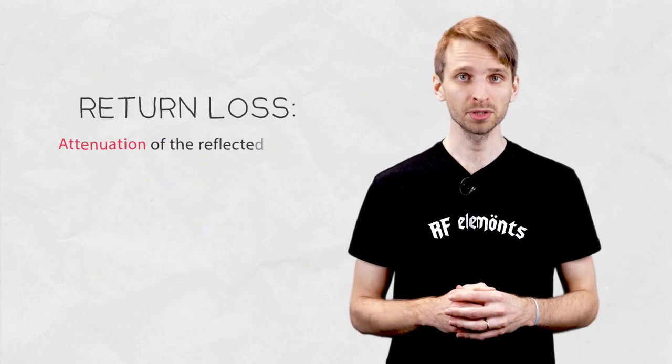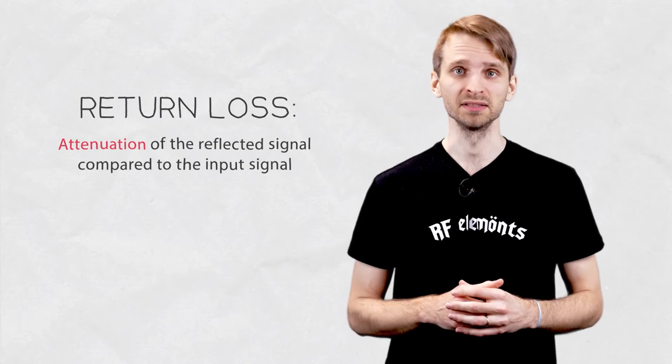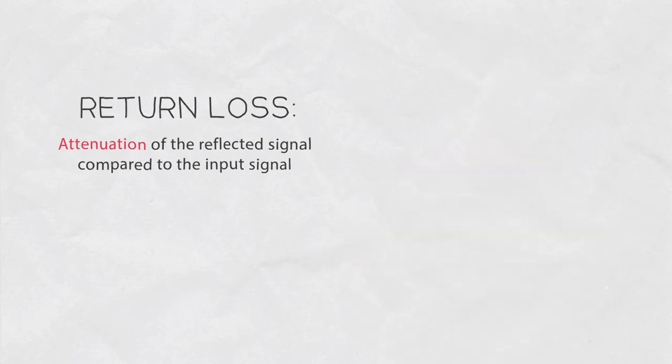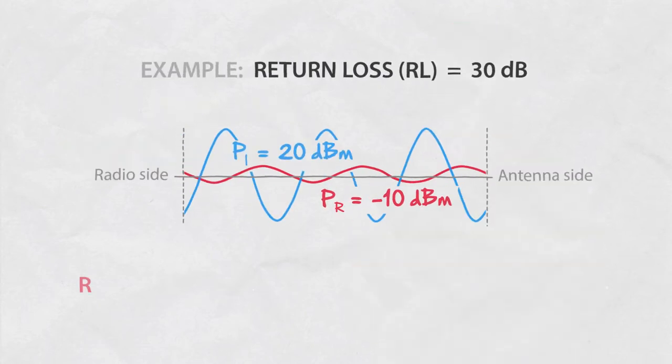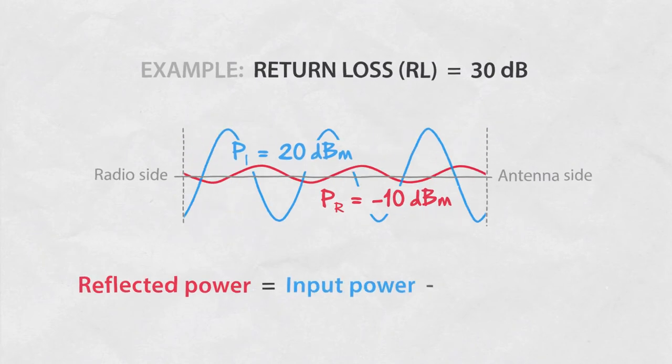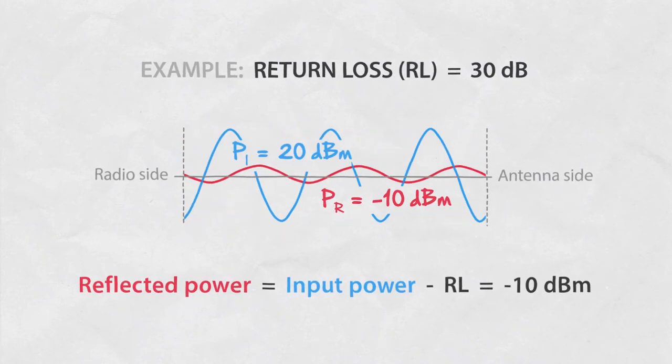Return loss tells us what portion of the input power is reflected from the antenna due to the mismatch. For example, if return loss is 30 decibels, it means the reflected signal is 30 dB weaker than the input signal.